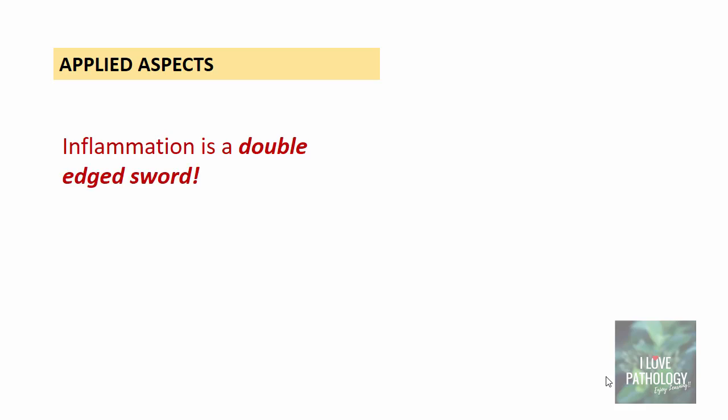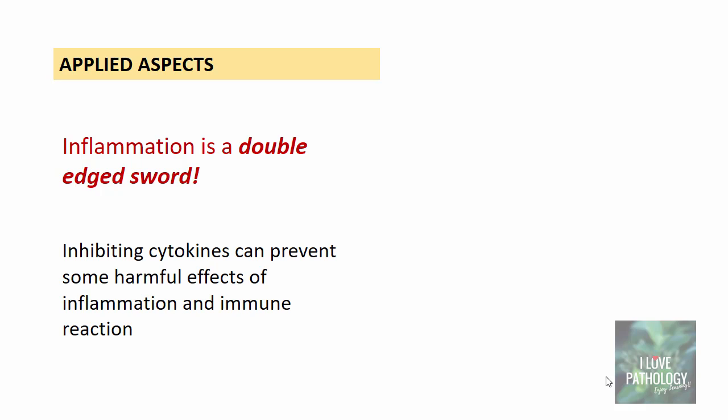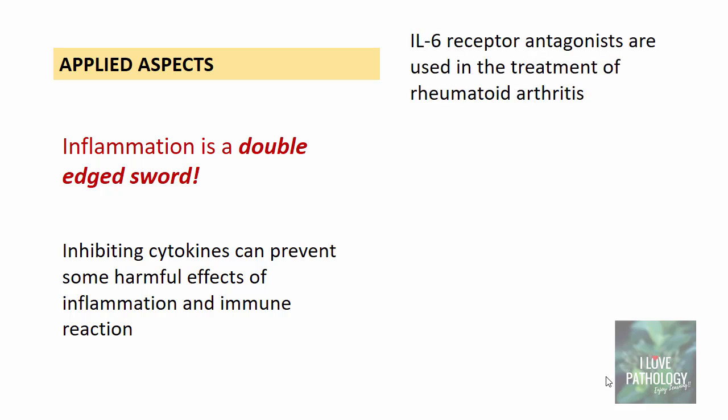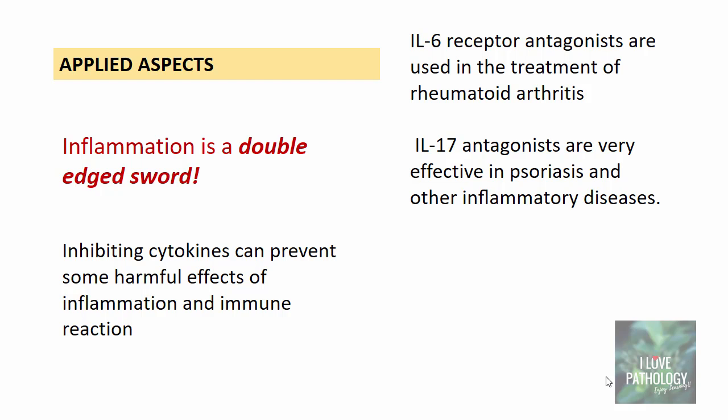Regarding applied aspects of cytokines in inflammation: although inflammation is a protective mechanism with inflammatory cells acting as soldiers fighting invading agents, this fighting occurs within our own body — making the body the battlefield, which can itself be damaged. That is why inflammation is called a double-edged sword. Inhibiting these cytokines can prevent some harmful effects of inflammation. For example, interleukin 6 receptor antagonists are used in the treatment of rheumatoid arthritis, and interleukin 17 antagonists are very effective in psoriasis.